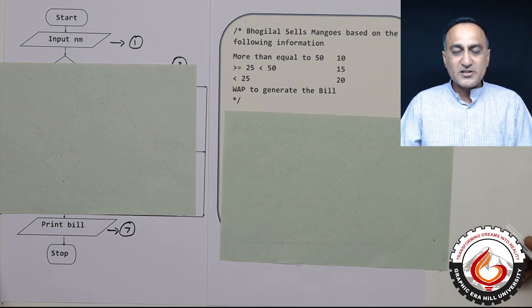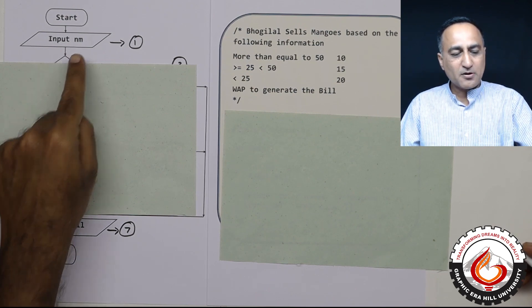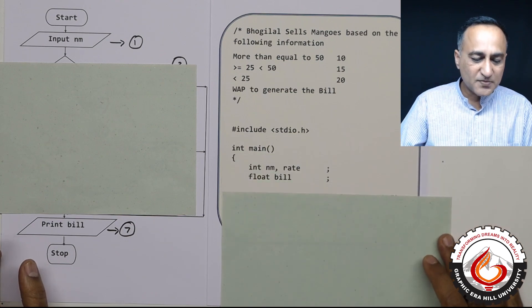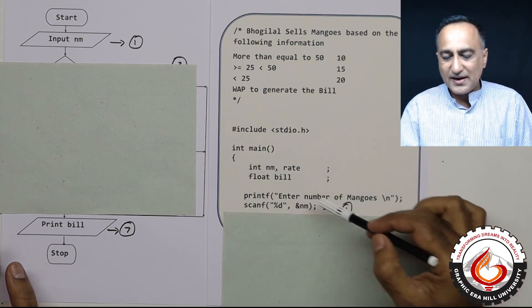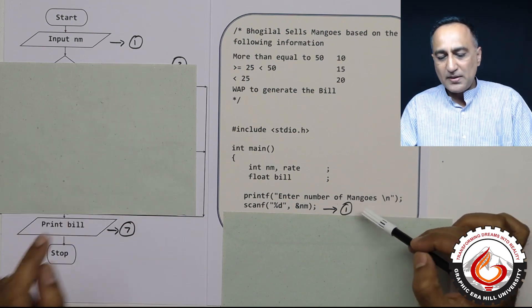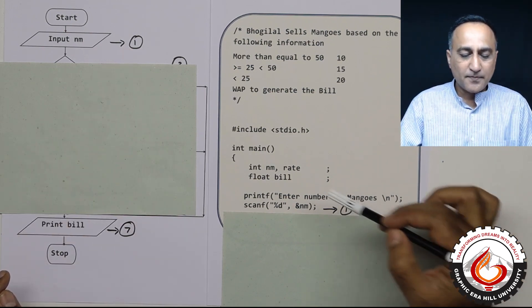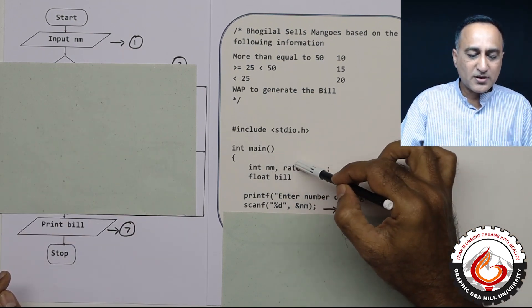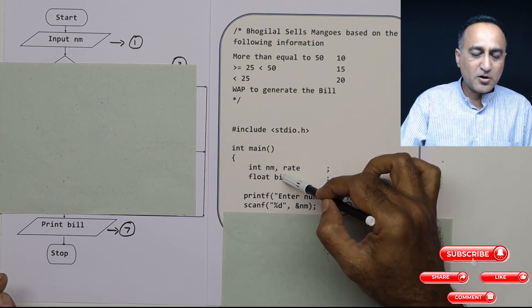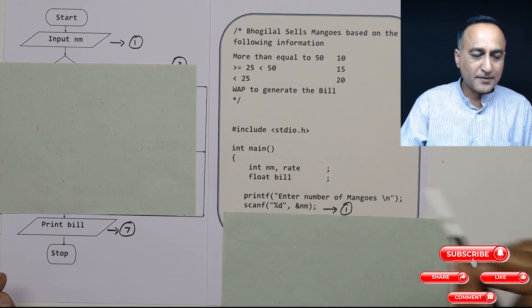The first thing I need to know from the user is the number of mangoes. So here I'm going to ask: enter the number of mangoes bought. NM stands for number of mangoes, rate stands for rate per mango, and bill is the bill amount, which is the product of number of mangoes into rate.